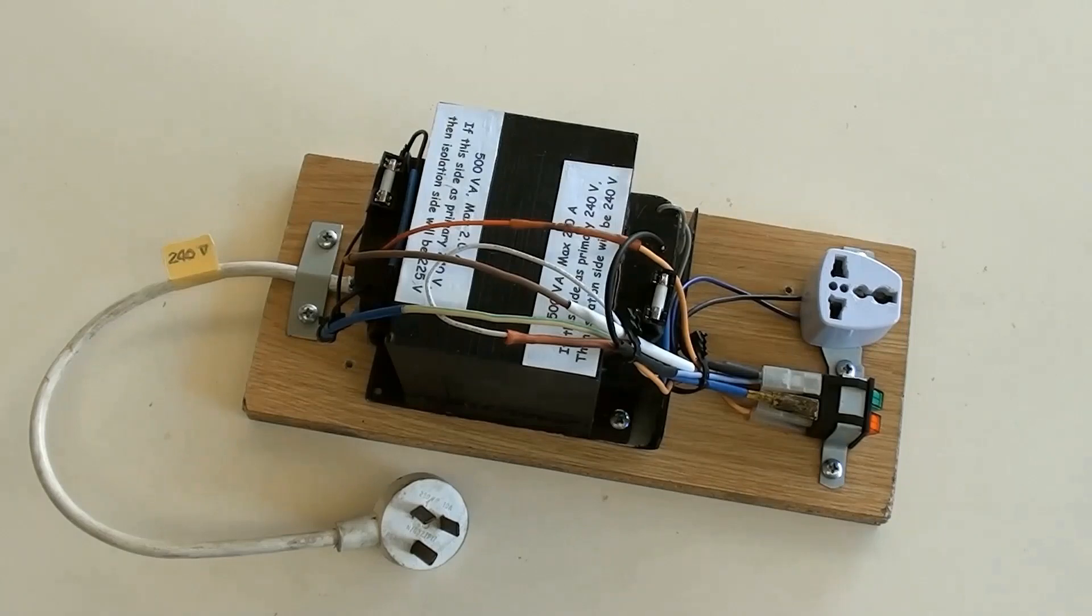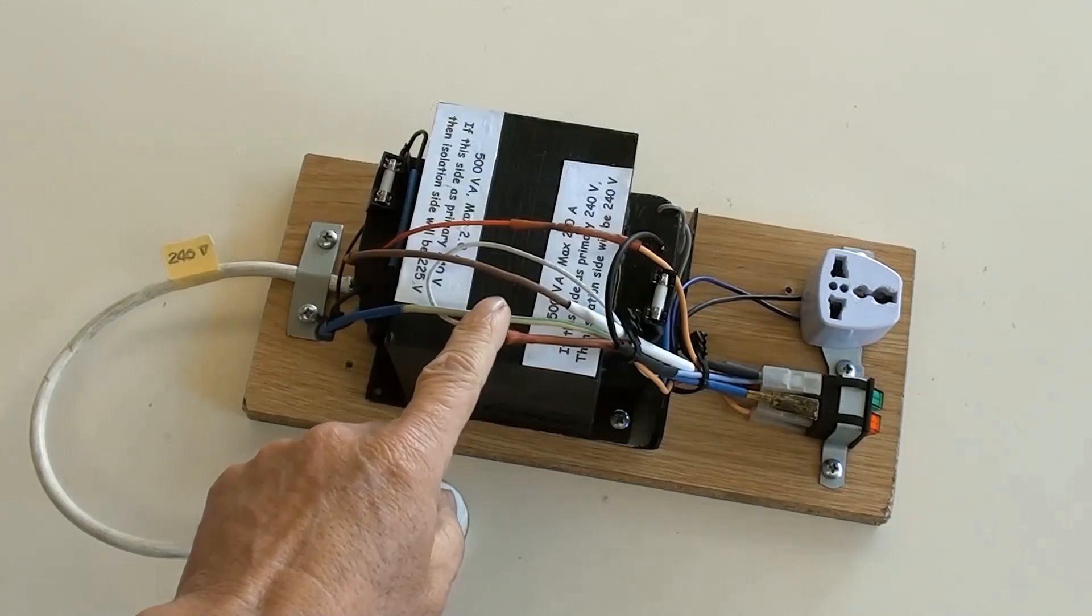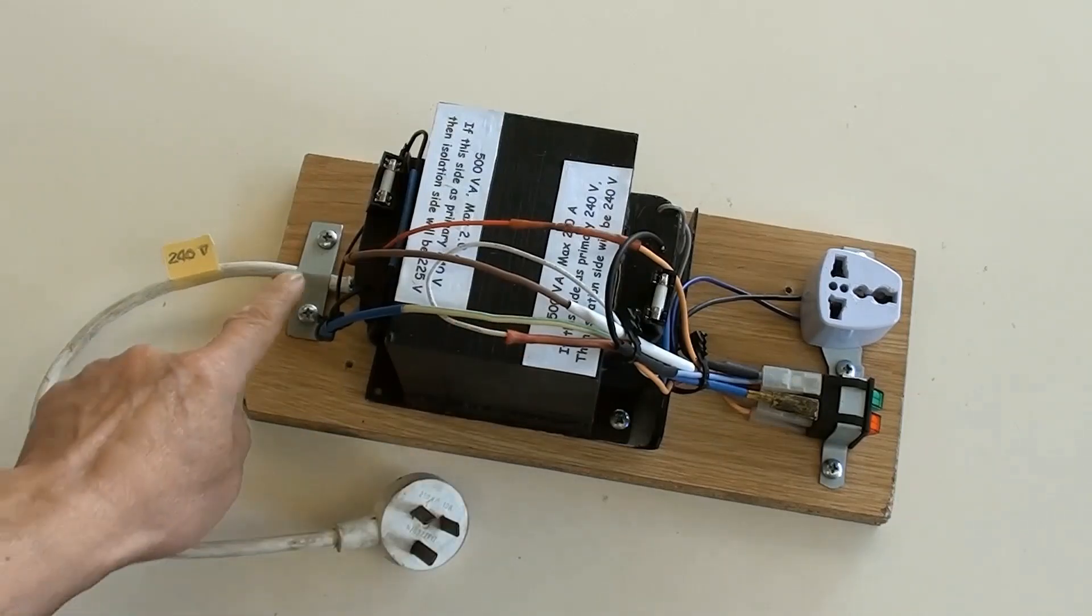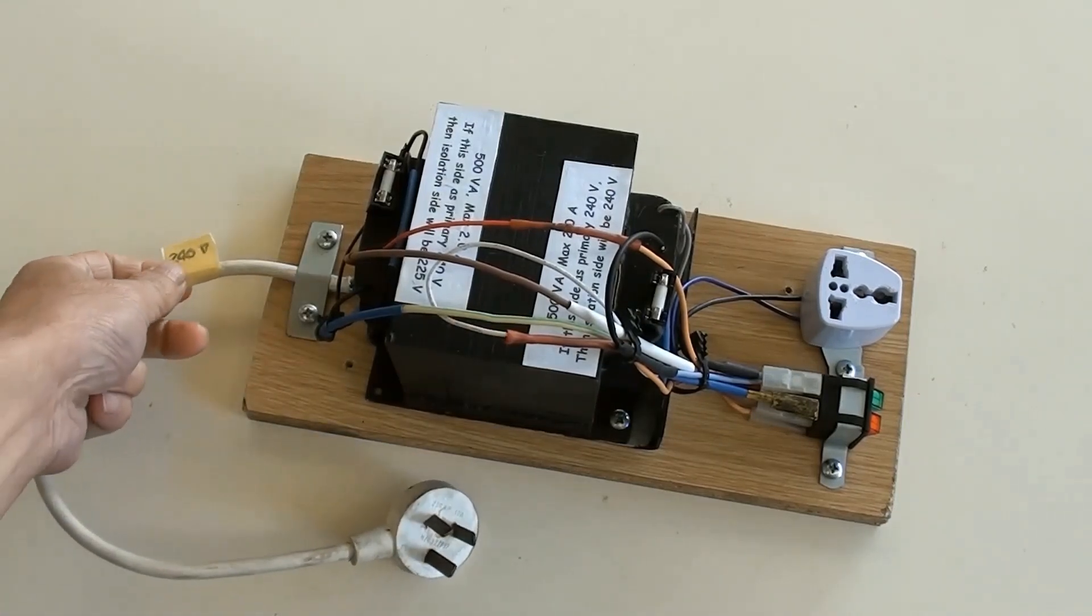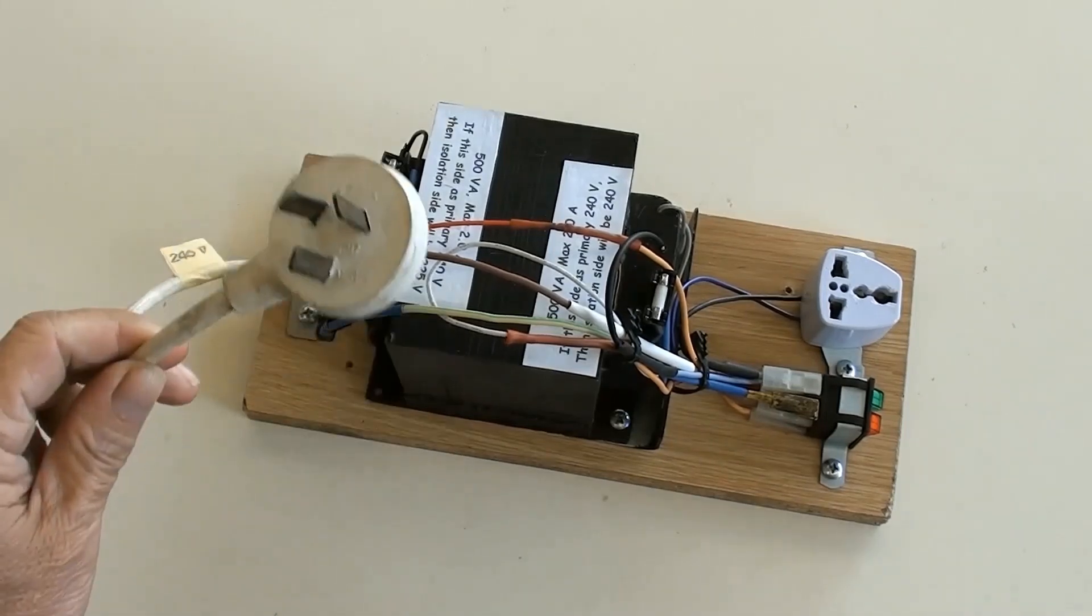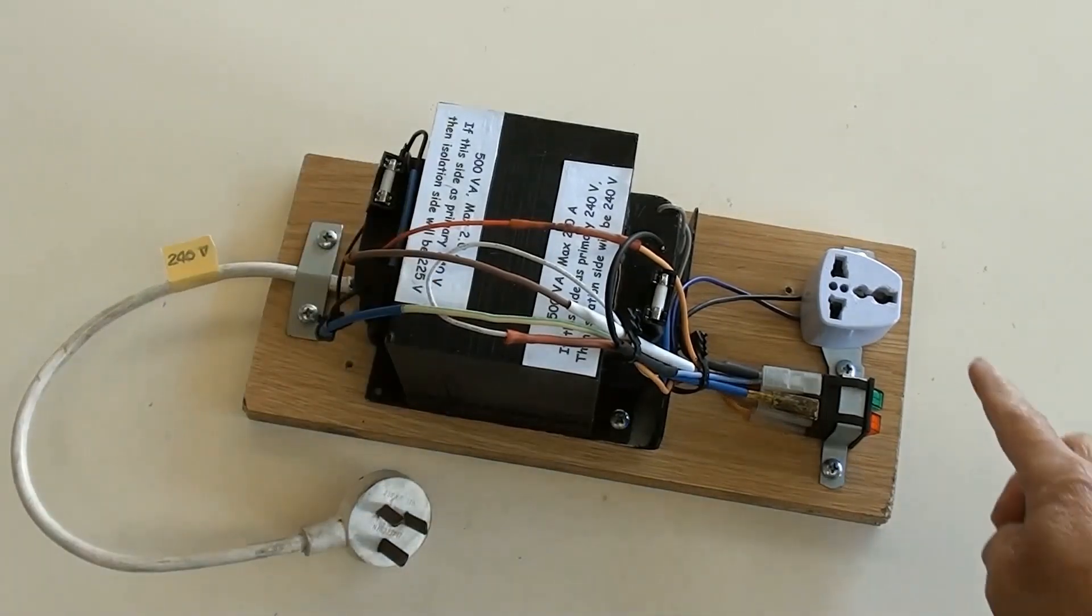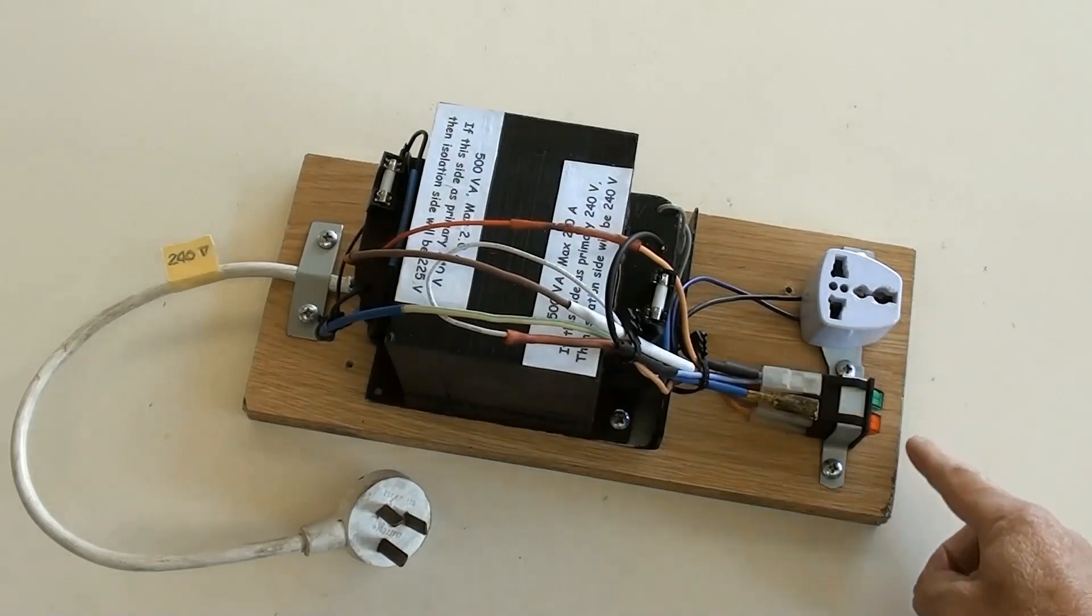Isolation transformer and associated accessories have been fixed on a piece of board. A few wires have been properly connected already. On the left it is the input of 240 volt plug. On the right they are the output socket and switches.